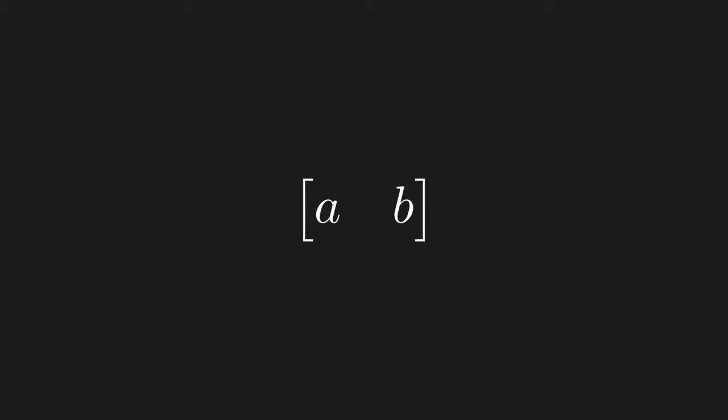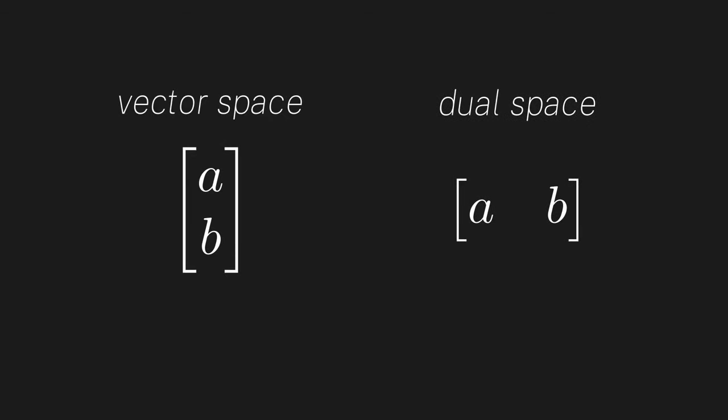Much like column vectors, this set of all row matrices actually forms its own vector space. Seriously, check all the conditions, they work. This vector space is known as the dual space. Hopefully you see why it's called a dual space. Take your vector space of column vectors, turn them on their side, and what you get is the dual vector space of linear functionals.